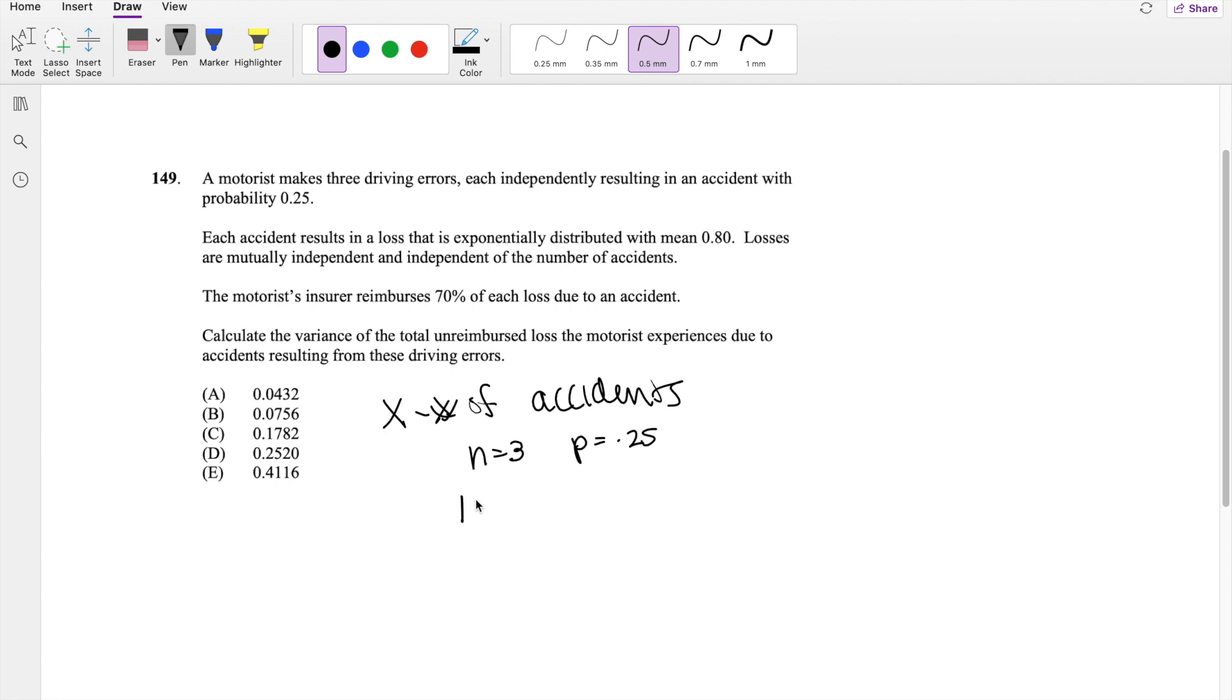Then because we know by binomial distribution, we know the expectation of X is equal to n times P, which is equal to 3 times 0.25, which is equal to 0.75.